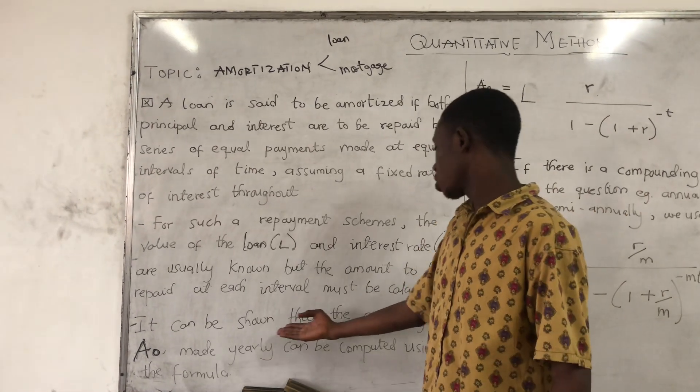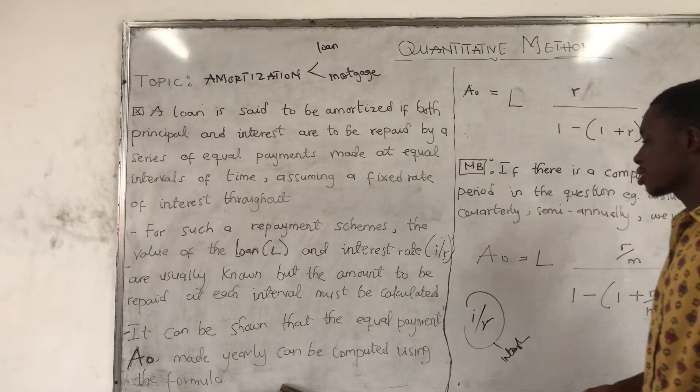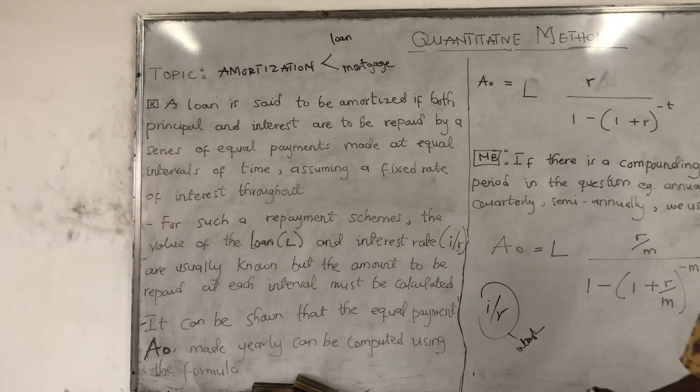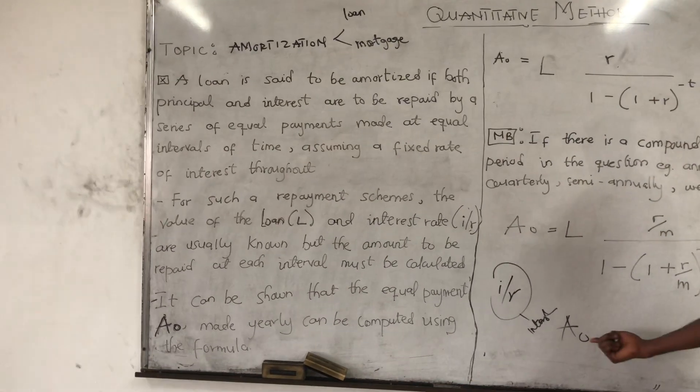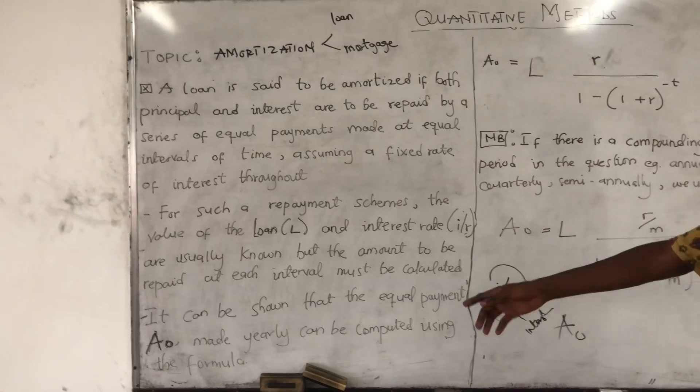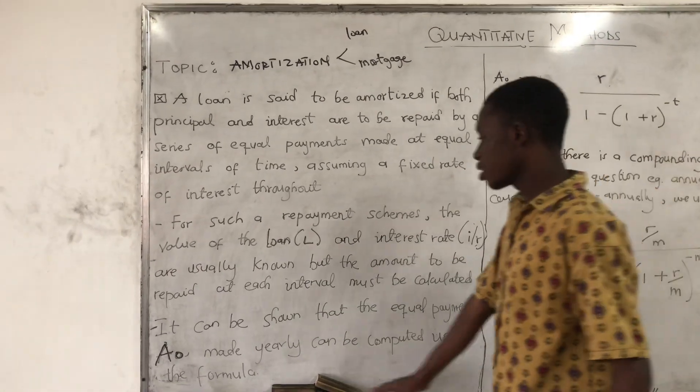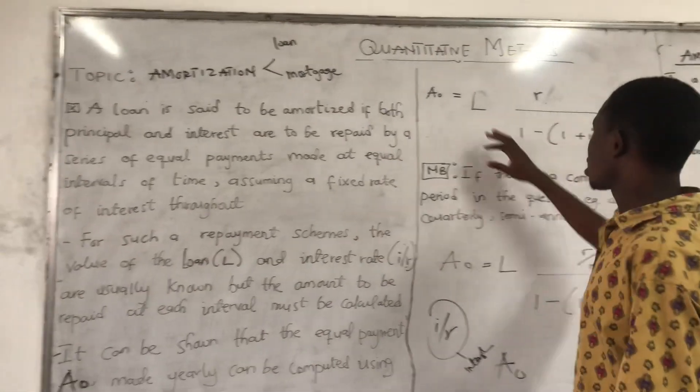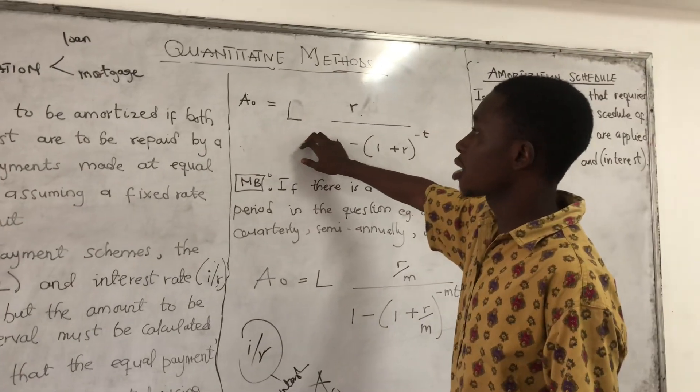It can be shown that the equal payment, which is noted by a capital A with a subscript O, can be computed using the formula. We have this formula for amortization.